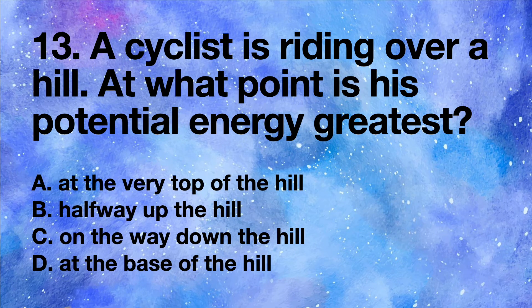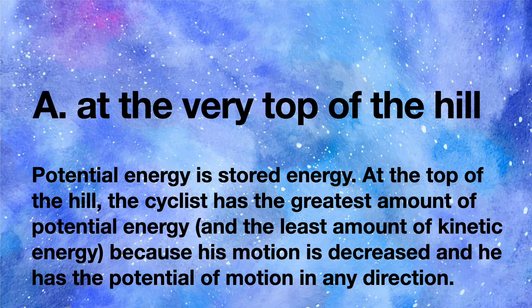A cyclist is riding over a hill. At what point is his potential energy greatest? A at the very top of the hill, B halfway up the hill, C on the way down the hill, D at the base of the hill. Answer: A at the very top of the hill. Potential energy is stored energy. At the top of the hill the cyclist has the greatest amount of potential energy and the least amount of kinetic energy, because his motion is decreased and he has the potential of motion in any direction.